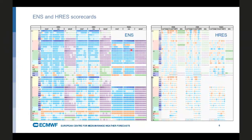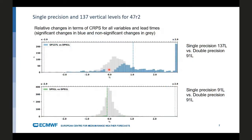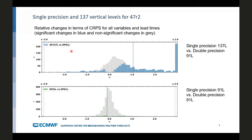Just to reassure you: the relative changes of the CRPS for all variables and lead times — on the bottom, you have single precision versus double precision. As expected, there is nearly no significant change from the injection of single precision, which is great. On the top, you can see the difference from the increased model levels, and in the histogram you can quite neatly see a significant number of improvements.